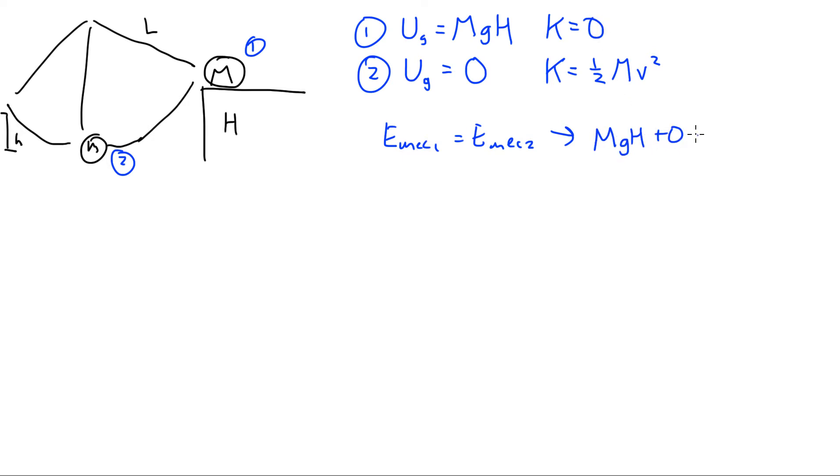So E_mech 1 is this plus this. Big M, G, big H, nothing here, plus zero, equals zero plus 1/2 big M v. I suppose I should call this v2. What the hell, v2 squared. I could call it U. Whatever.